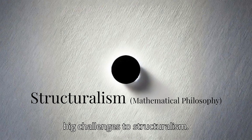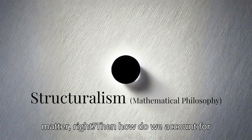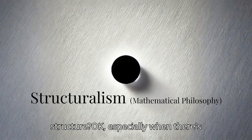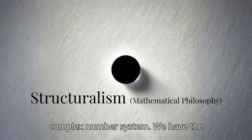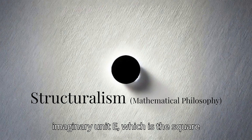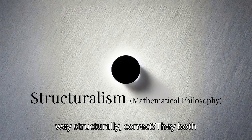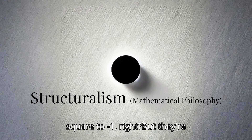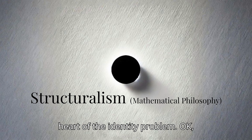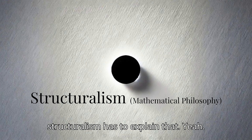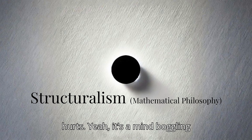Having multiple set-theoretic models leads to one of the big challenges to structuralism: the identity problem. If only the relationships matter, how do we account for the identity of objects within a structure — especially in systems with symmetry? For example, in the complex number system, we have the imaginary unit i, which is the square root of negative one, but we also have negative i, which behaves the exact same way structurally — they both square to negative one. They're considered different things, but if they act the same, how can they be different? That's the heart of the identity problem.